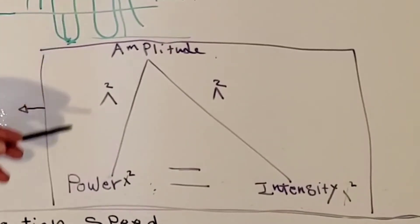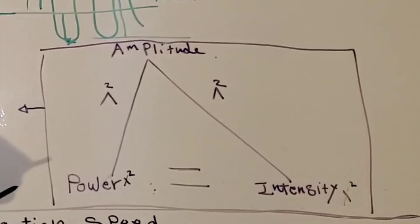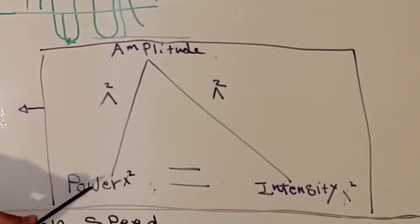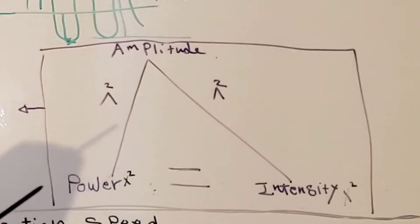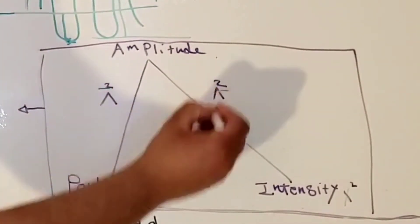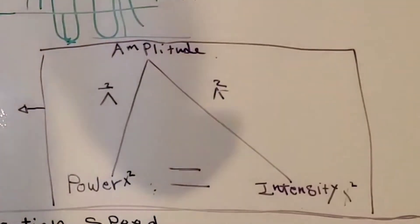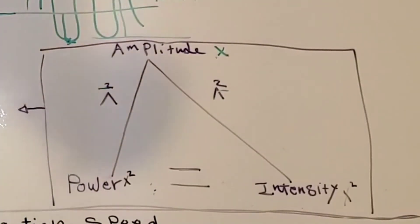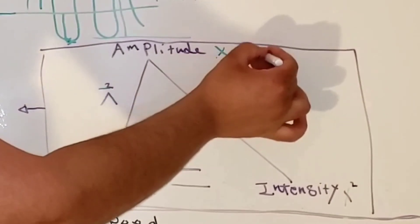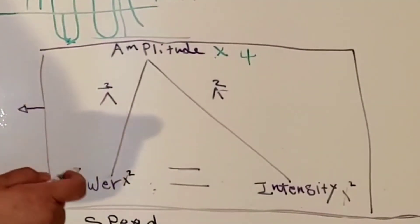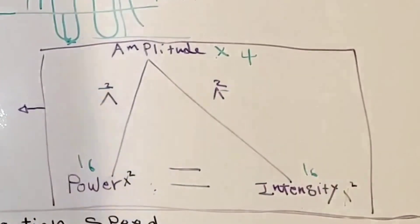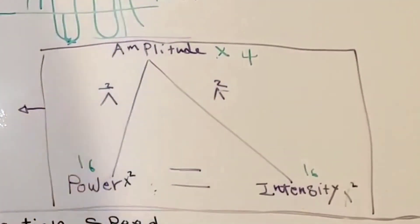For the relationship between the amplitude, power, and intensity: they are proportionally related to each other. Power and intensity are proportionally related to the amplitude squared. So if the amplitude increases by a factor of x, the power and the intensity will increase by a factor of x squared. For example, if the amplitude increases by a factor of 4, the power and intensity will increase by a factor of 16, because 4 squared equals 16.